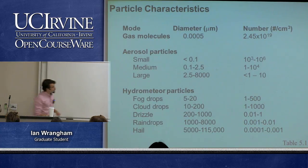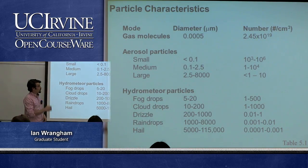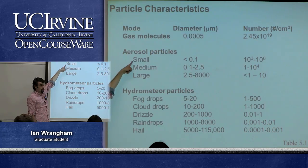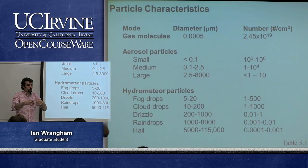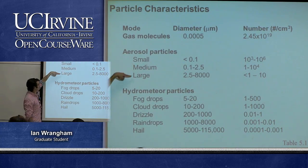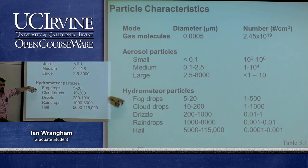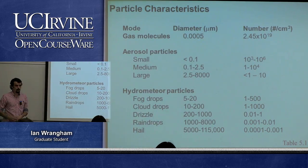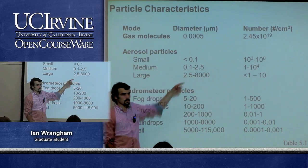This chart shows a range of particle sizes versus their number density. As expected, smaller aerosols have higher abundance. Small molecules can coagulate and grow into larger sizes, but there are far more small particles than large ones. Also shown are hydrometeor particles — different forms of precipitation like fog, cloud droplets, drizzle, raindrops, and hail — with their diameters and number densities.